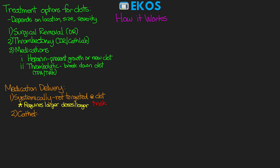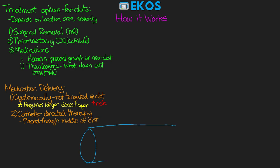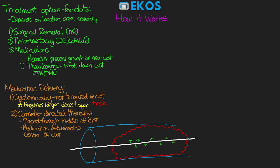Another option is catheter-directed therapy, where a special drug delivery catheter is placed in IR or the cath lab and threaded through the middle of the clot along its length. The catheter has holes along the side of it so the thrombolytic can exit at various points and seep out into the center of the clot. This allows for more direct delivery of the lytic to the clot, meaning less medication can often be used and more effective thrombolysis can occur.